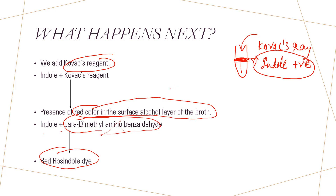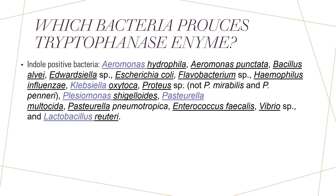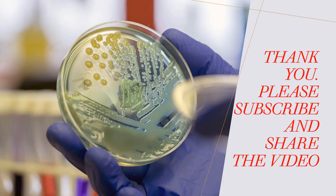Organisms which are able to produce the tryptophanase enzyme are indole positive bacteria. Some common examples of indole positive bacteria include Escherichia coli. Klebsiella oxytoca is indole positive, whereas Klebsiella pneumoniae is indole negative. Some Proteus species are also indole positive bacteria. If you like this video, please subscribe and share. Thank you.